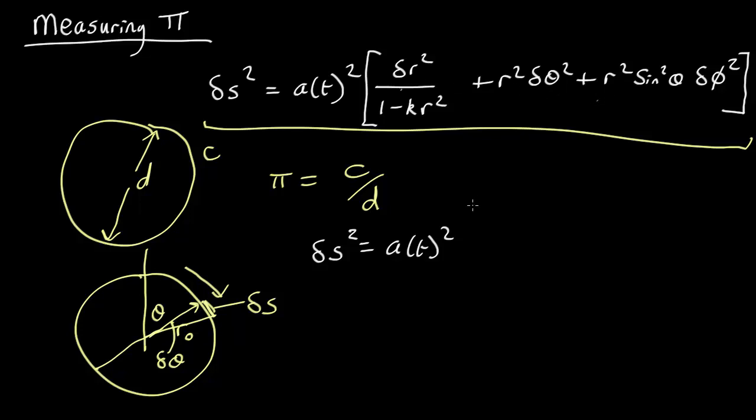So that's going to be zero. This term is going to be zero. So that's just r squared d theta squared. So that tells us that the element of length delta s is just a of t r, which in this case is r naught, times the change in the angle. It's just a small angle approximation.